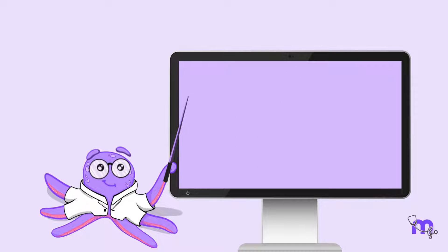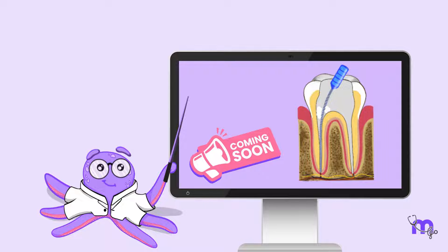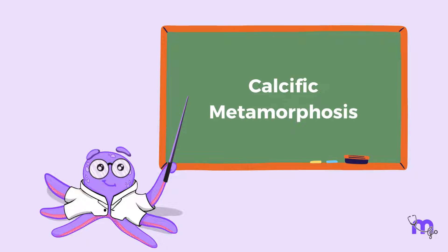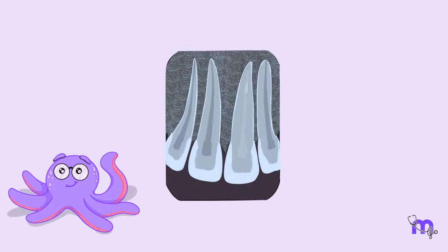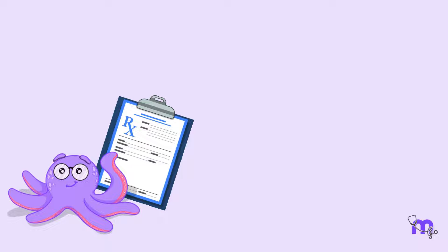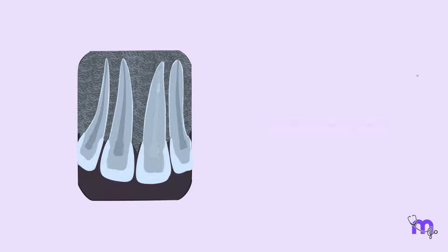Now, you must be wondering how we navigate our way into the canals in the presence of pulp stones — keep a lookout for our future videos. Let's learn about another interesting concept: calcific metamorphosis. Do you remember seeing radiographs of patients with complete radio opacity in their root canals? Such radiographs imply that there has been a complete replacement of the pulpal tissue with calcific material. On clinical examination, these patients often have a history of trauma.